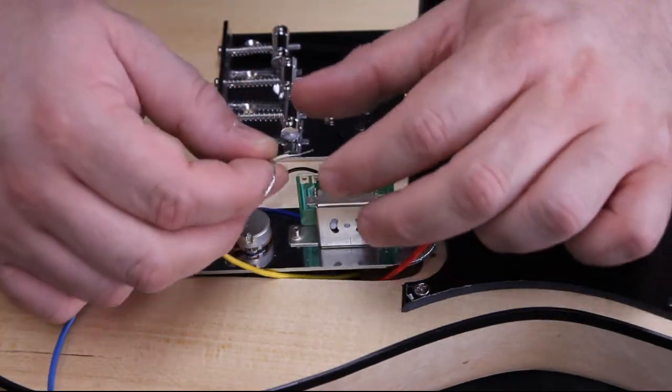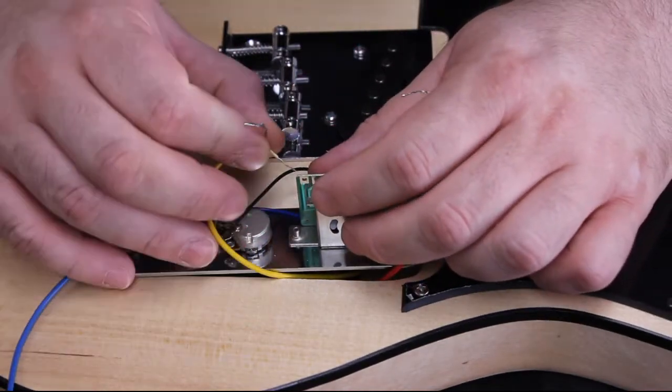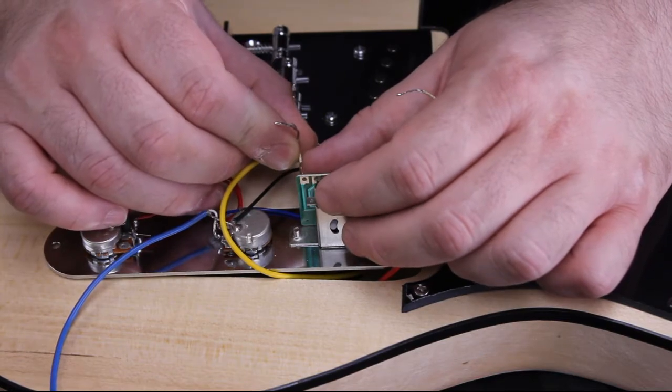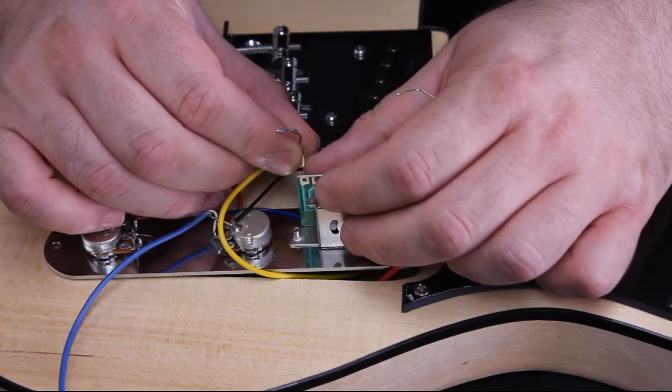We'll start with the neck pickup. Simply feed the wire through the back of the hole on the board and loop it through the hole next to it.